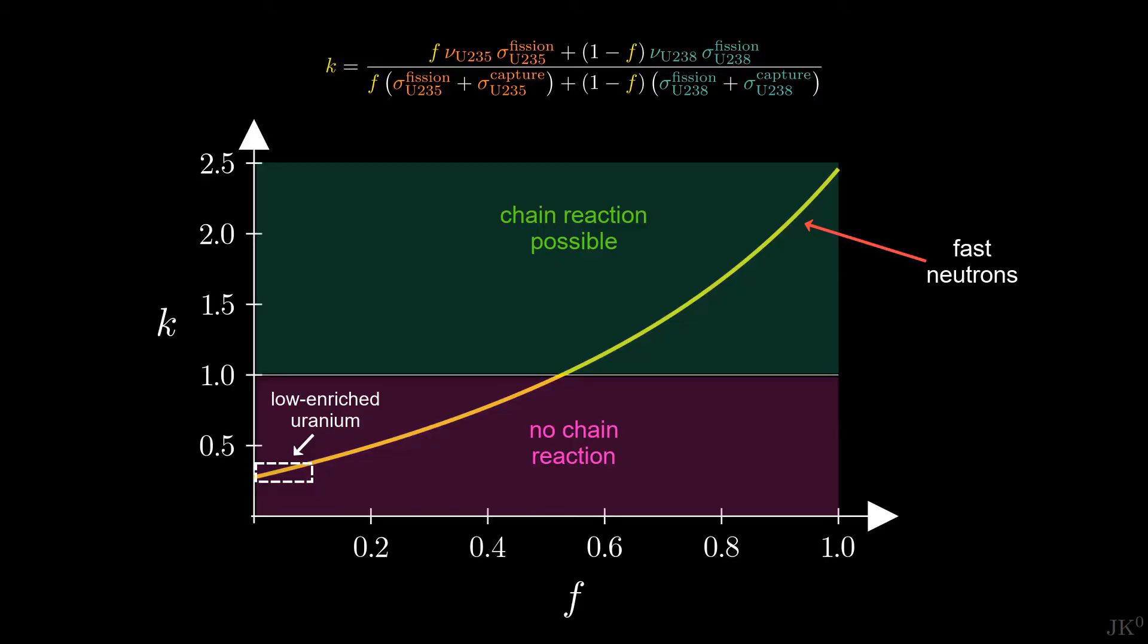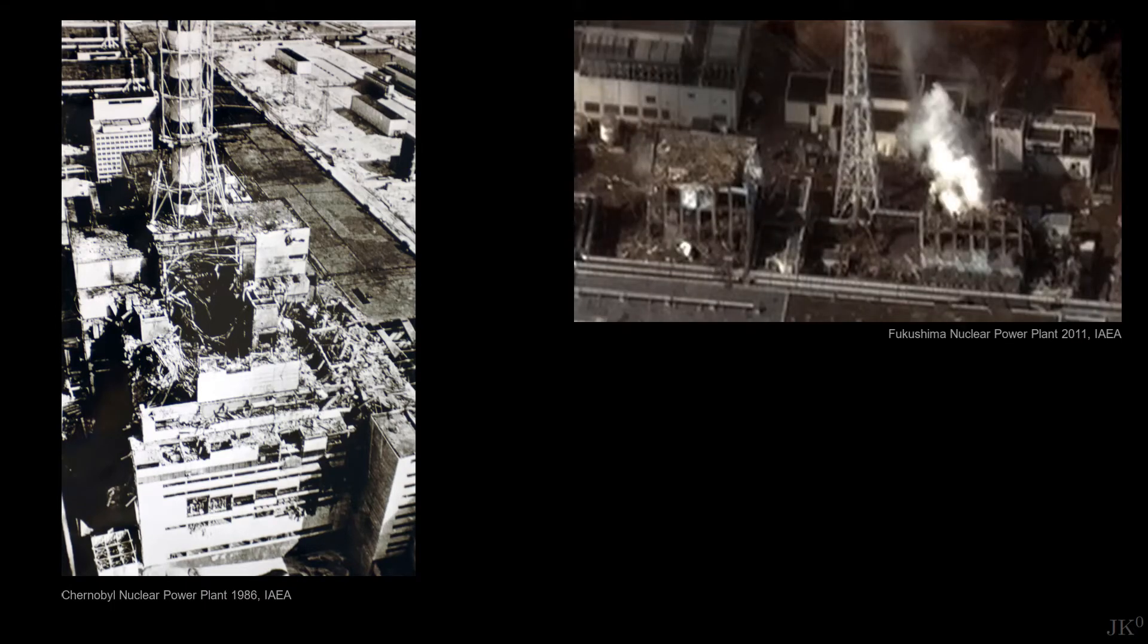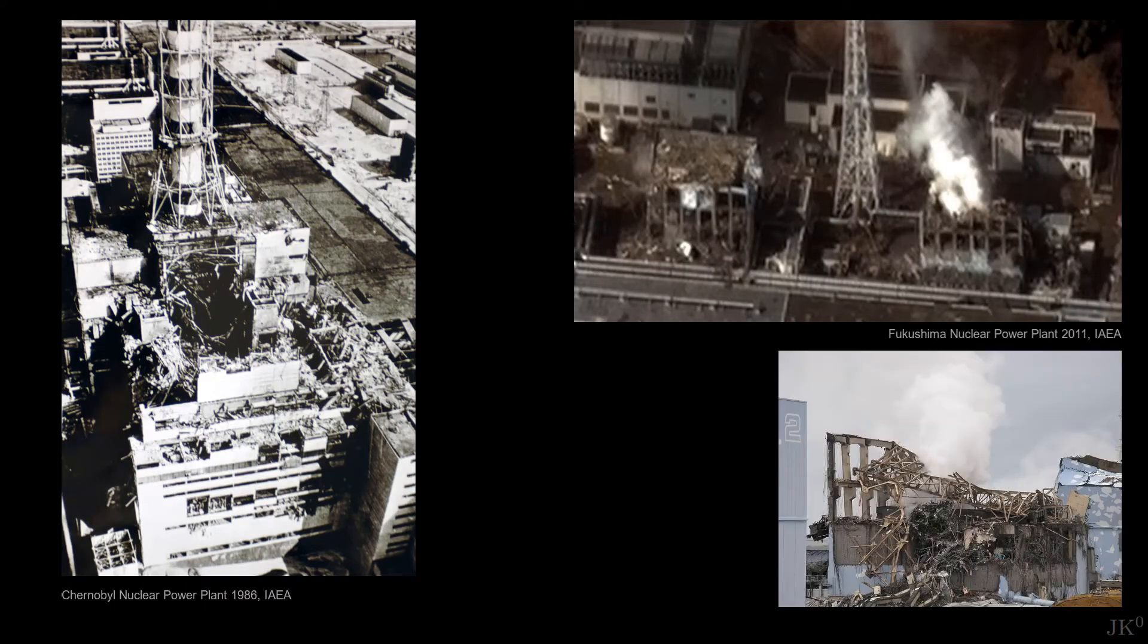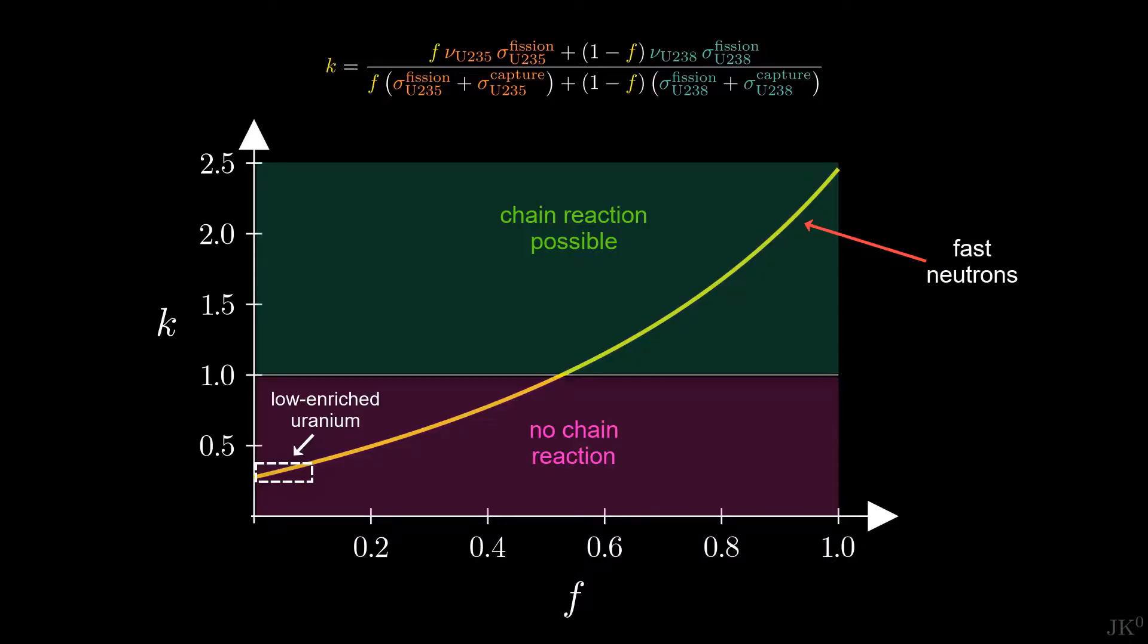A nuclear reactor just cannot explode as a nuclear bomb. Other types of explosions can still occur, for instance due to the build-up of gases, like it is believed it happened after the Chernobyl and Fukushima accidents. However, they were not nuclear explosions because fast neutron chain reactions are not possible with low enriched uranium using reactors.